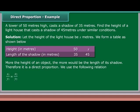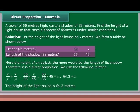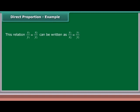We use the relation x1 upon y1 is equal to x2 upon y2. So 50 upon 35 is equal to x upon 45, which gives 50 upon 35 into 45 equals x. Therefore x equals 64.2 meters — the height of the lighthouse is 64.2 meters. Alternatively, this relation can be written as x1 upon x2 is equal to y1 upon y2.